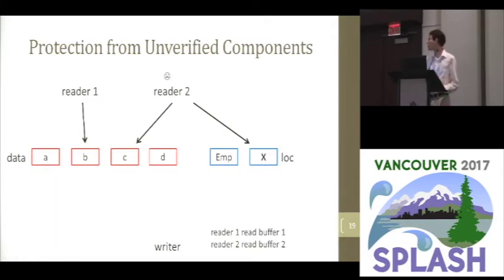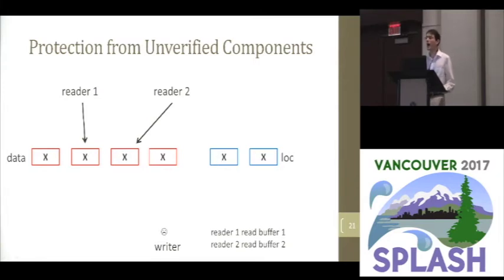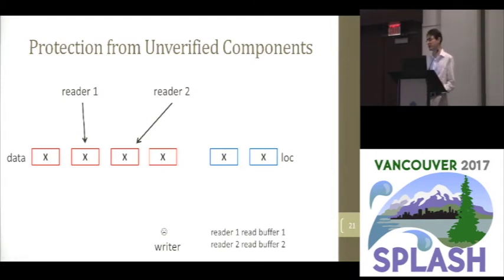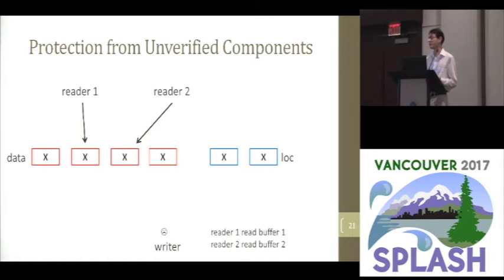What if the writer is malicious? Then it has write access to all of the buffers, so it can put garbage in all of them. But importantly, it can't interfere with the readers' ability to receive up-to-date data from other writers. That's for two reasons: first, it doesn't have write access to the buffers of any other instance of the messaging system. And second, it can't force the readers to block. Crucially, because we only use atomic exchange operations for synchronization, there's nothing a writer can do to force readers to just sit and wait — they can still continue running and getting useful data from any other writers in the system.